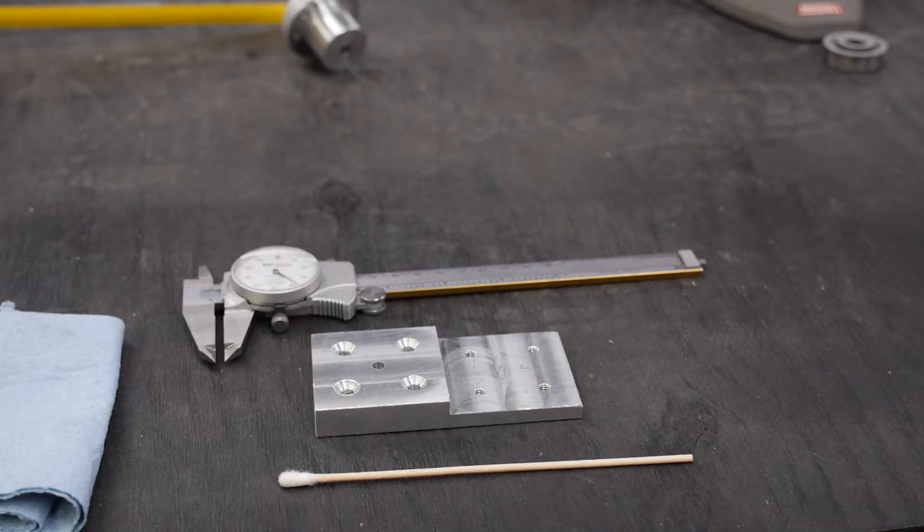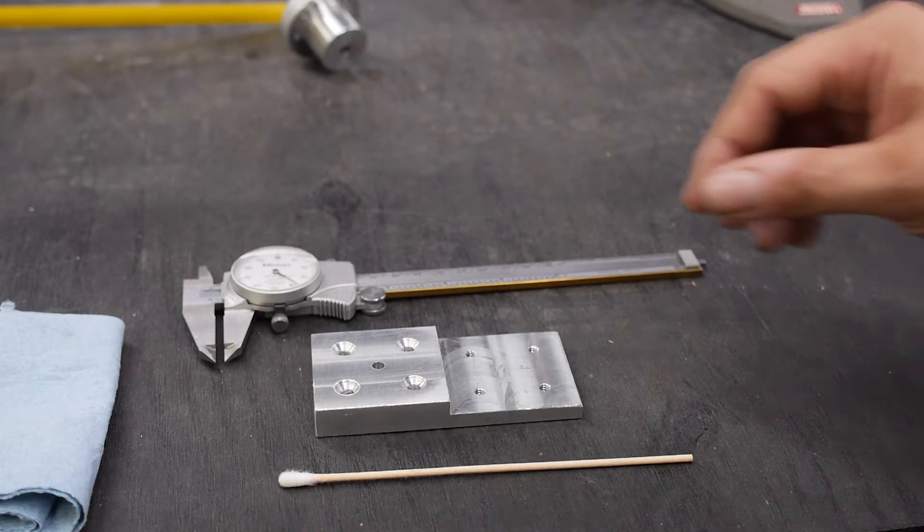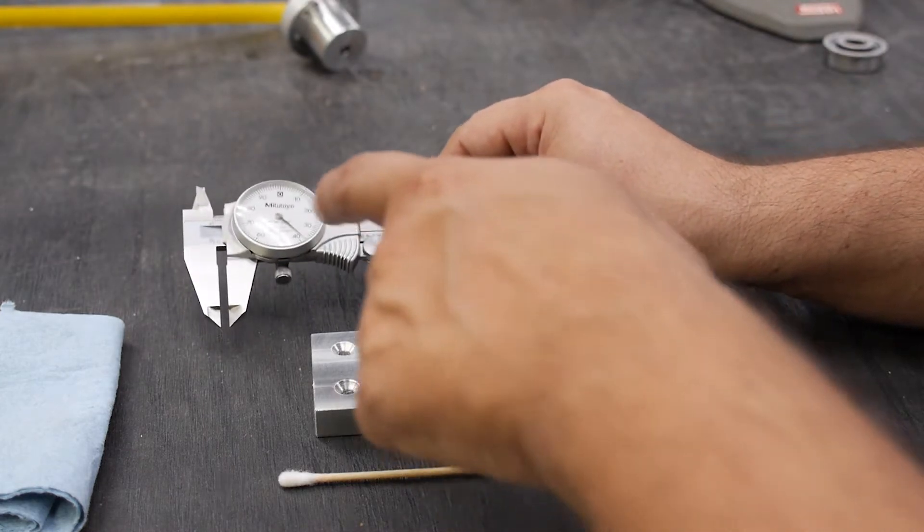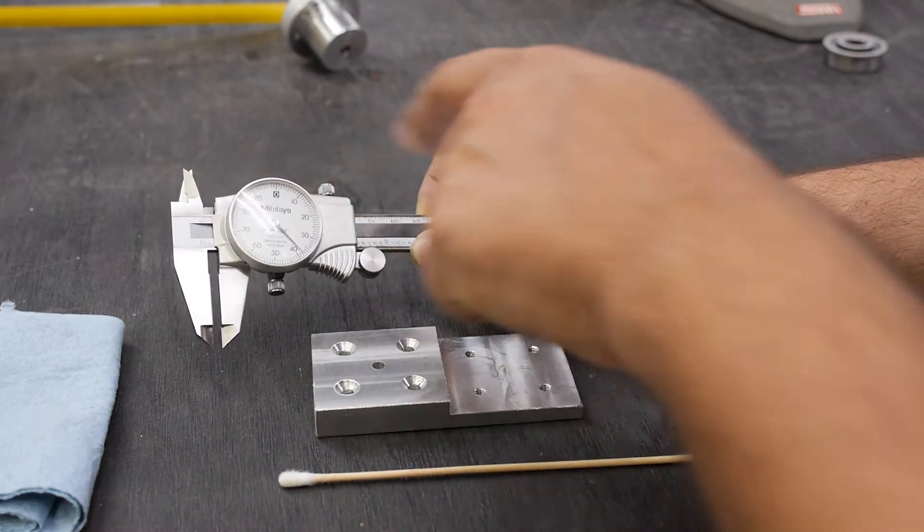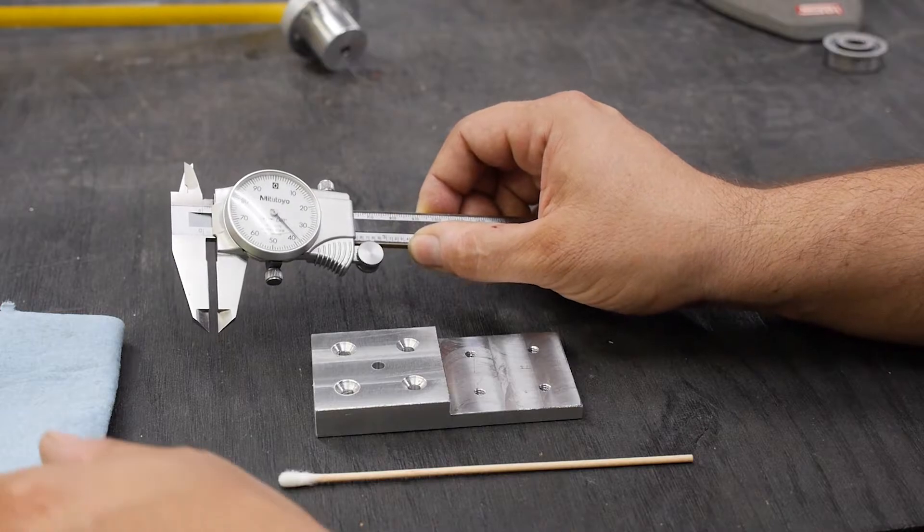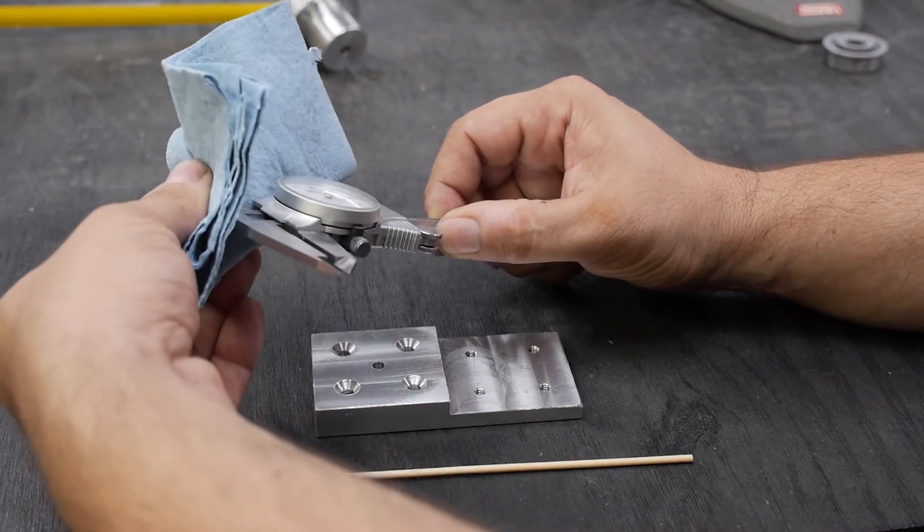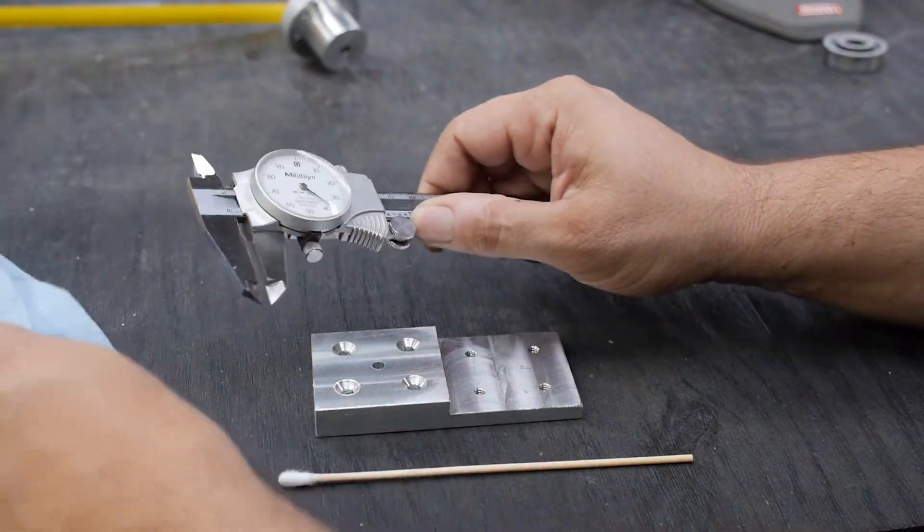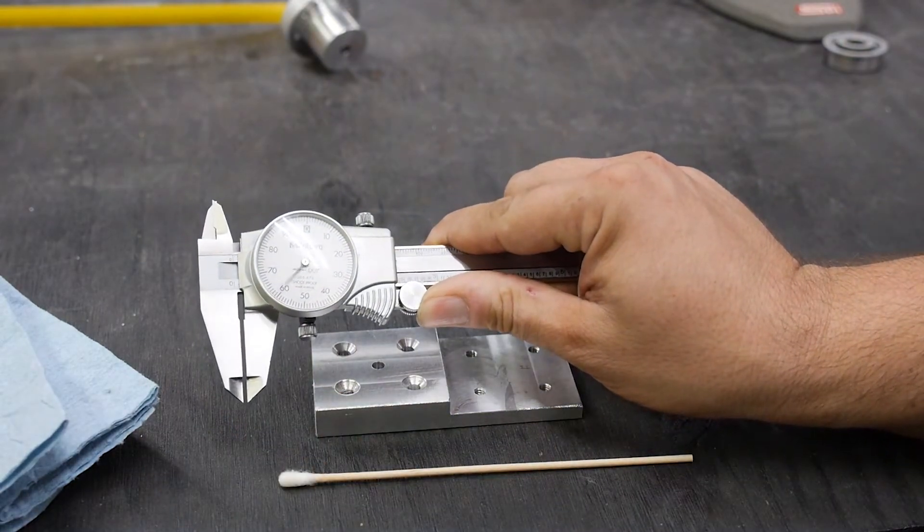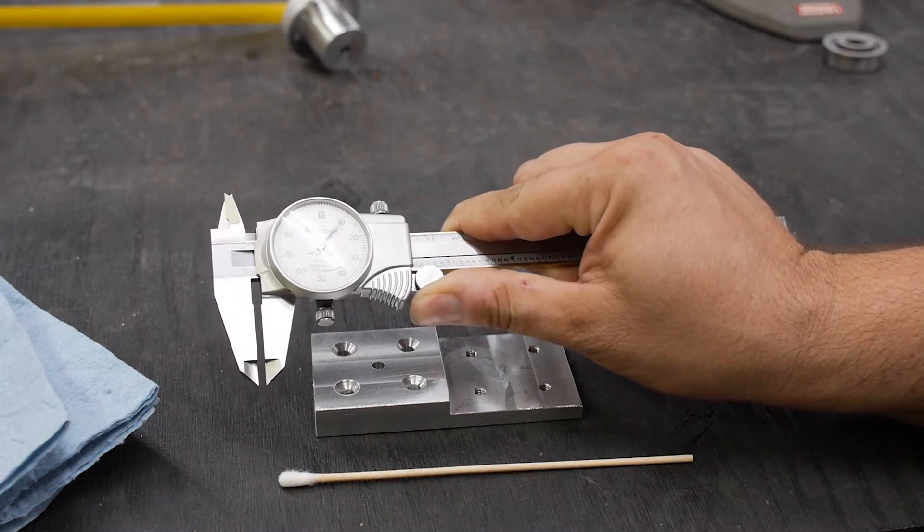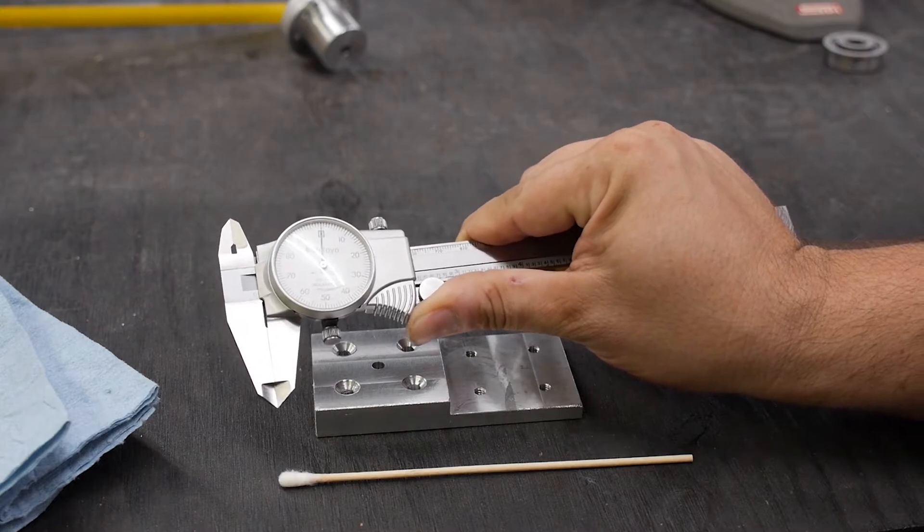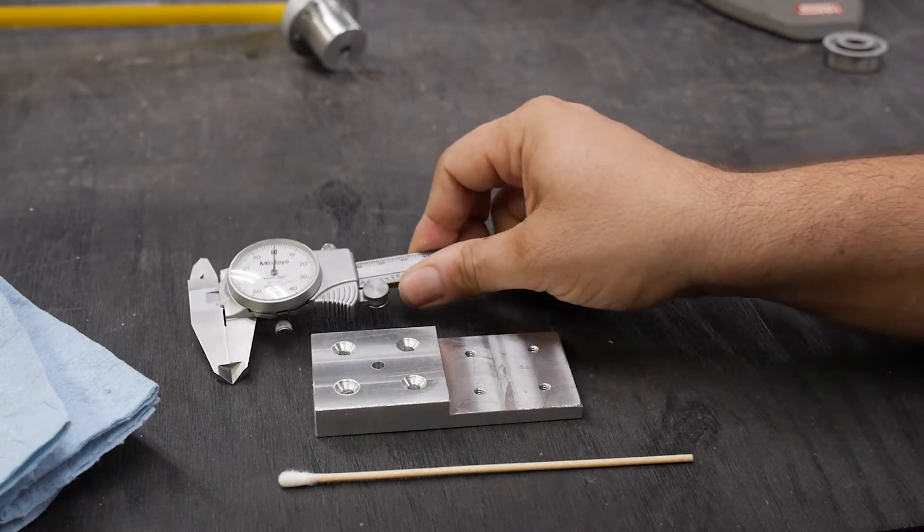A second type of measurement we can make using dial calipers is an internal measurement using the smaller internal jaws at the top of the calipers. To make this type of measurement, we start the same way. We first wipe off the jaws. Second, we'll check the zero on the calipers two or three times.